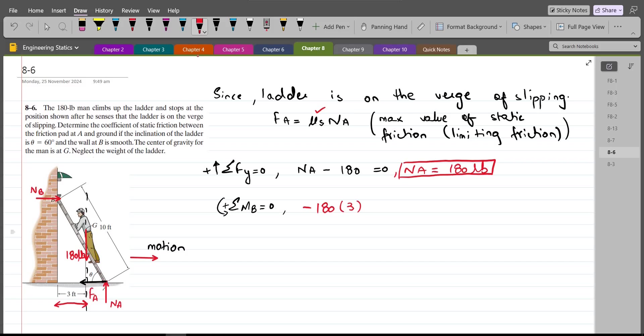FA is trying to rotate the ladder in clockwise direction about point B. So the moment produced by this FA force will be taken as negative as well, negative FA. And for the moment arm, the moment arm is this perpendicular distance. Let me draw it. This is the moment arm for the FA force, which we can calculate easily by using the trigonometry.